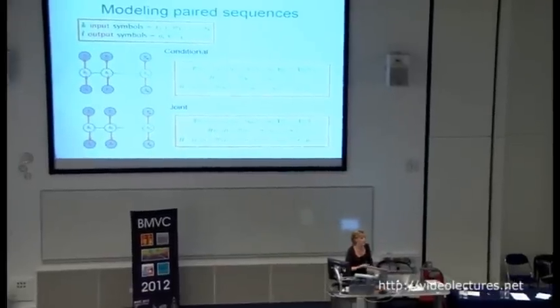Coming back to the motivation: in structure prediction, we want to model paired input-output sequences. We can derive spectral algorithms that retrieve the parameters of the model, but notice that in this case the operators will be indexed by two symbols because we have two sequences. The way the spectral method works is essentially the same as before; the observable statistics now look at both the input and output distributions.